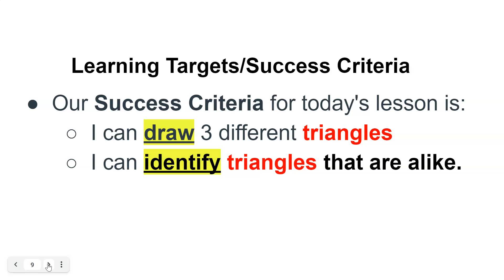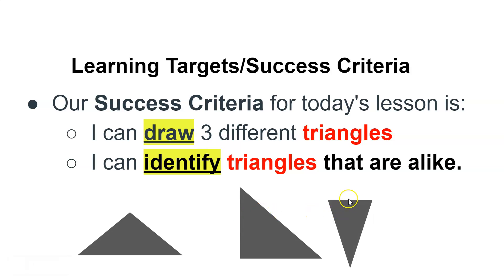So I can draw three different triangles. Here's a triangle with three different sides, and we have another triangle. It has three sides and three corners, so we know it's a triangle. And here is a triangle. It has three sides and three corners. Now let's look at this triangle right here.